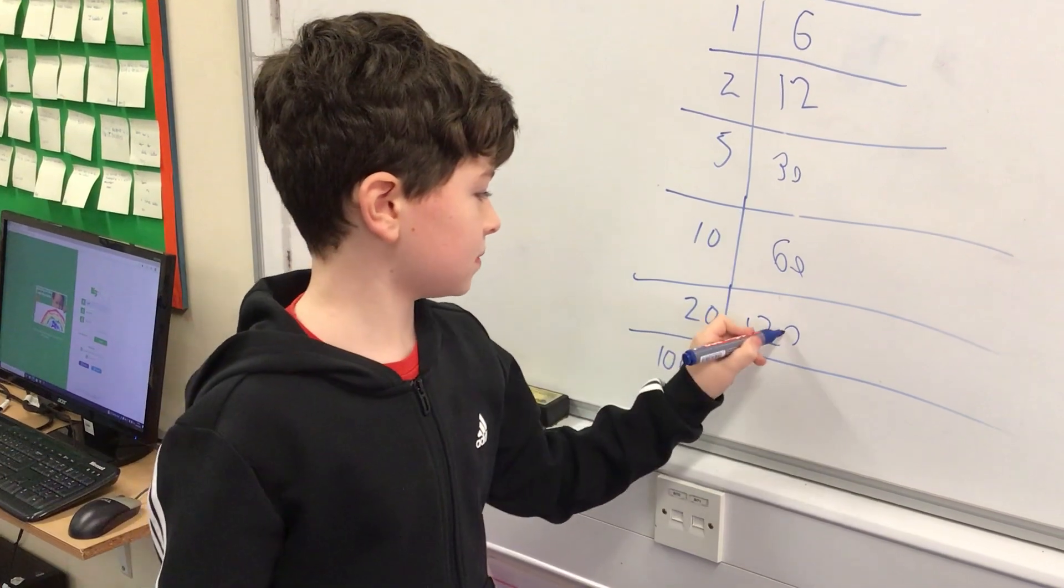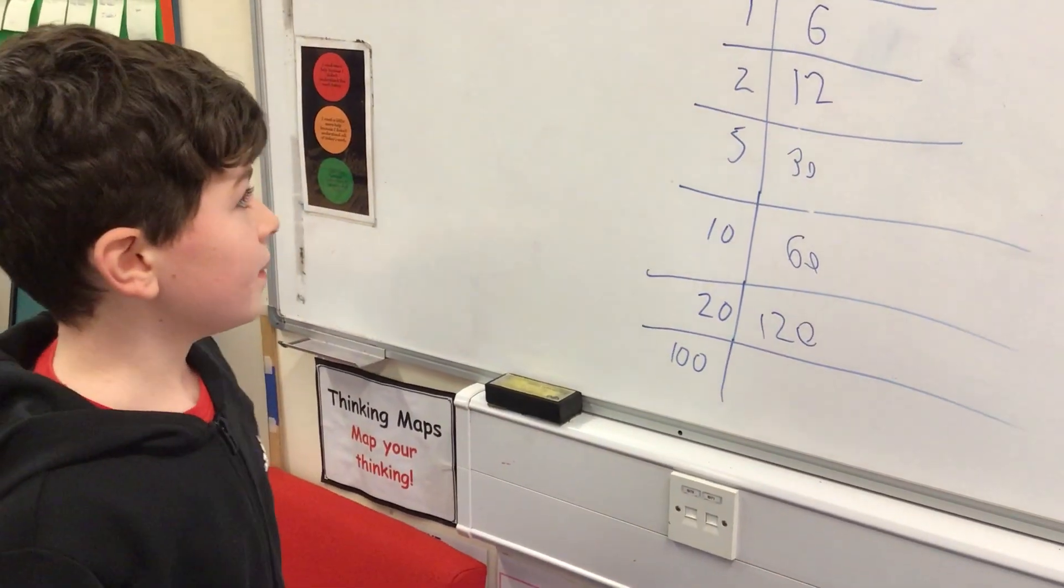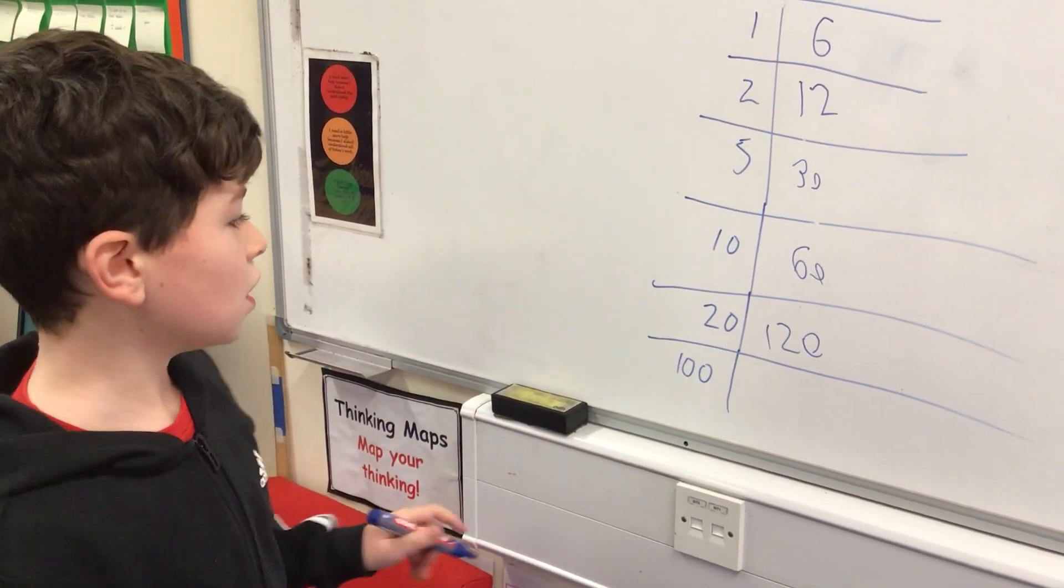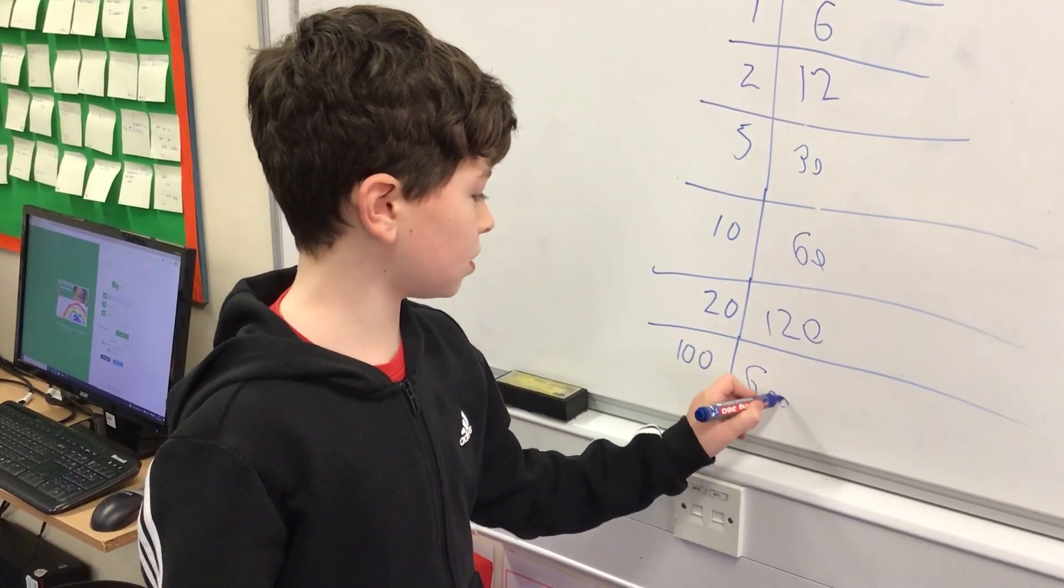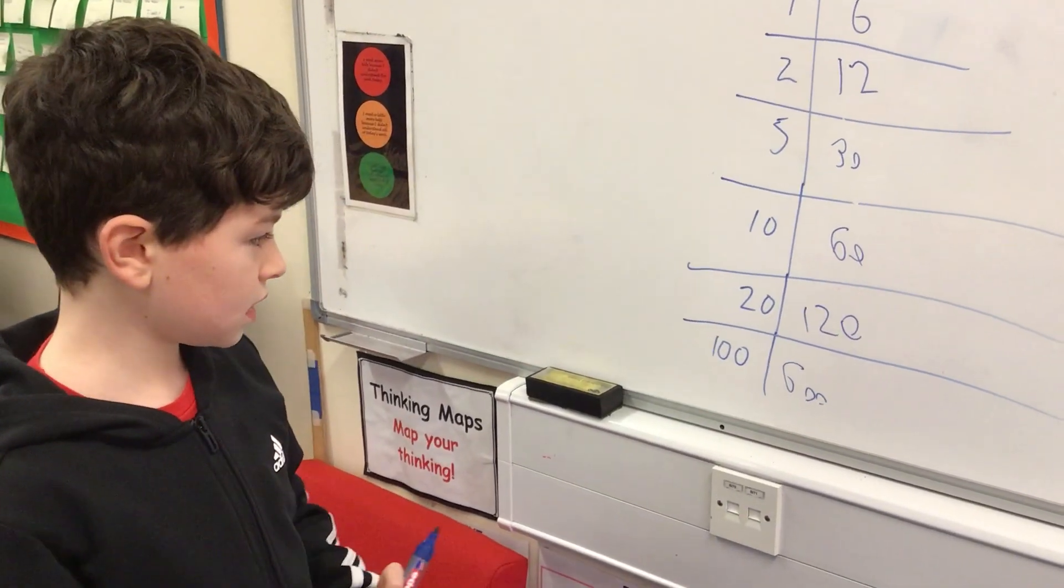And then we get six times 100, which is just six with two zeros on the end - six hundred.